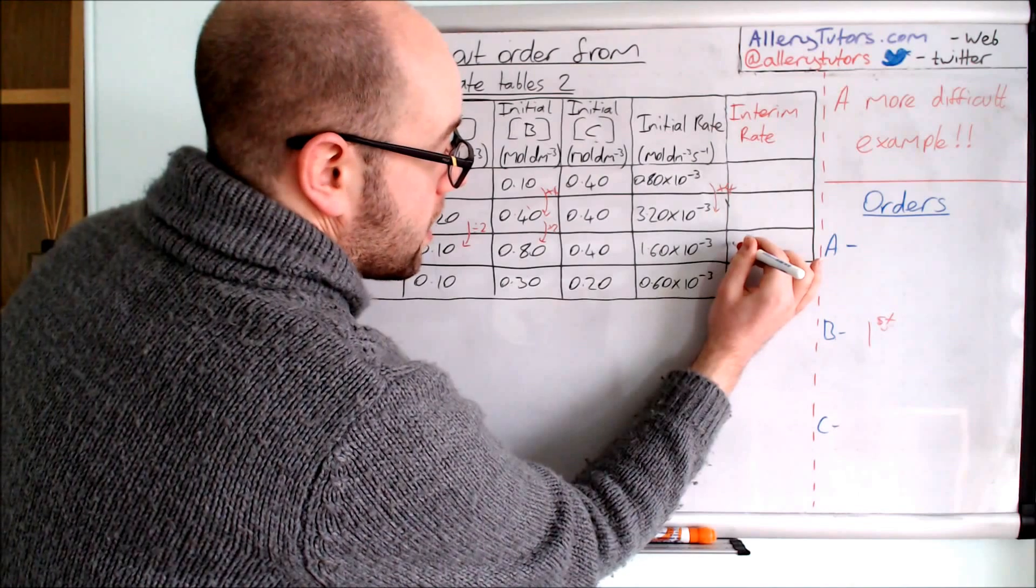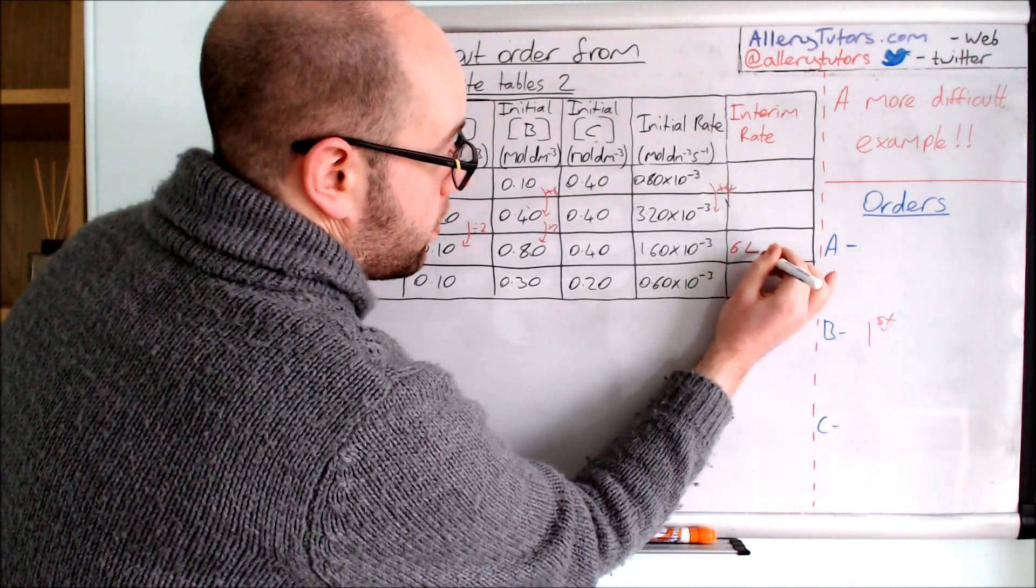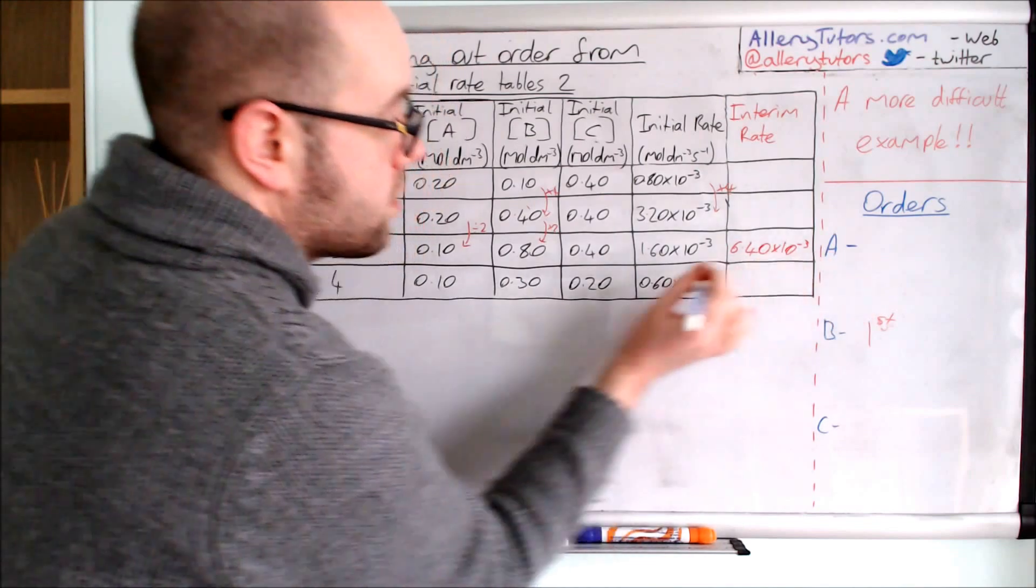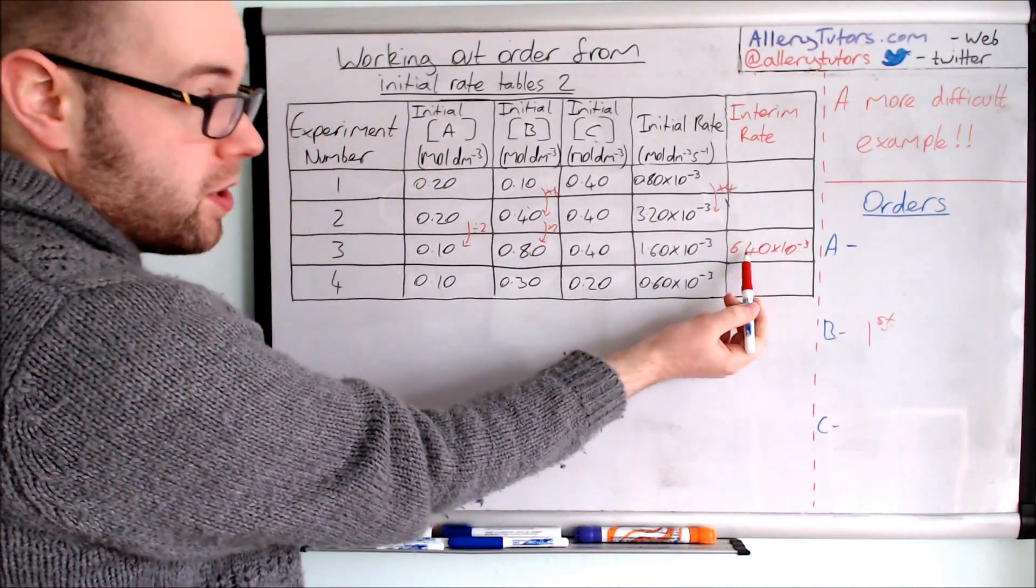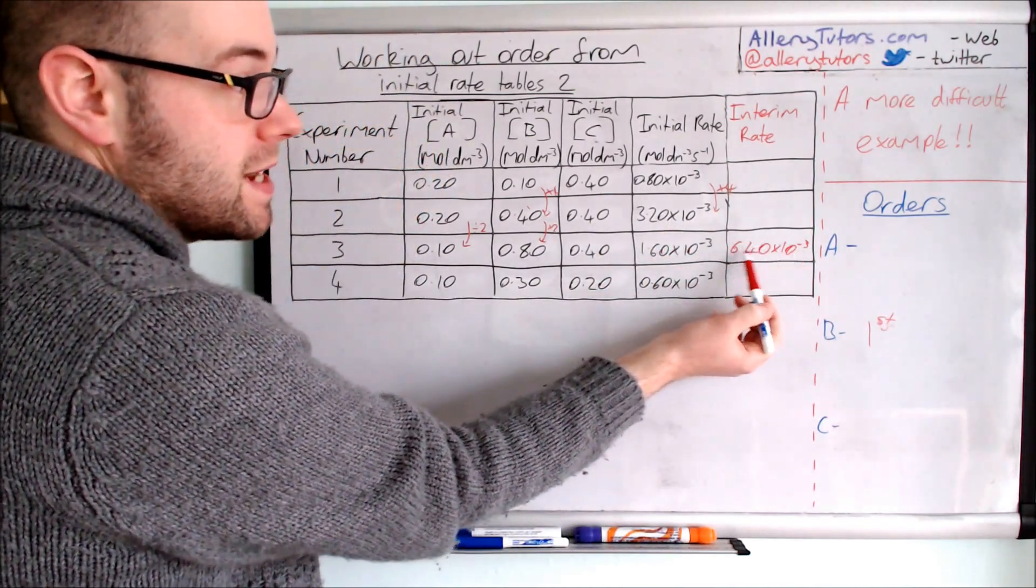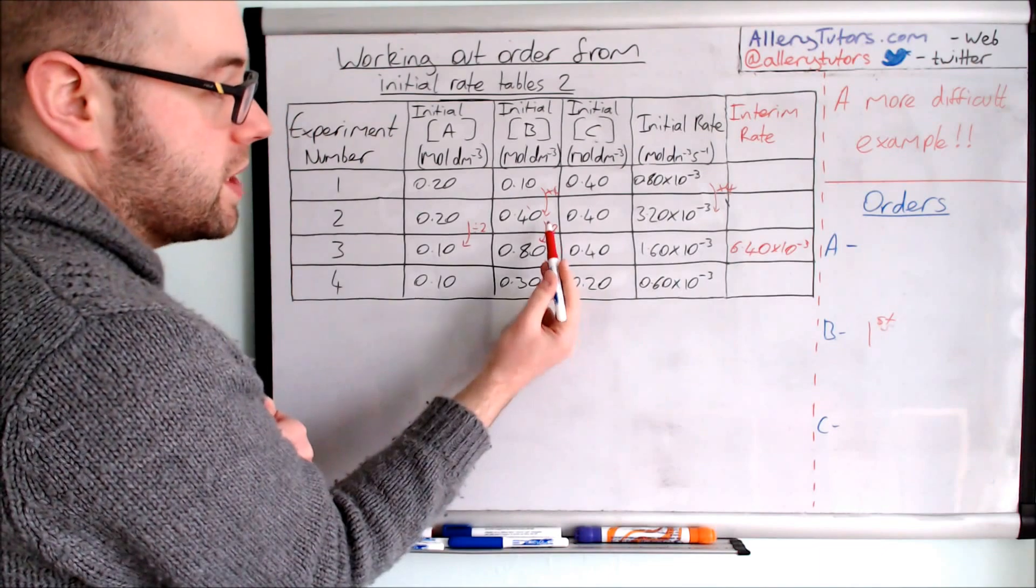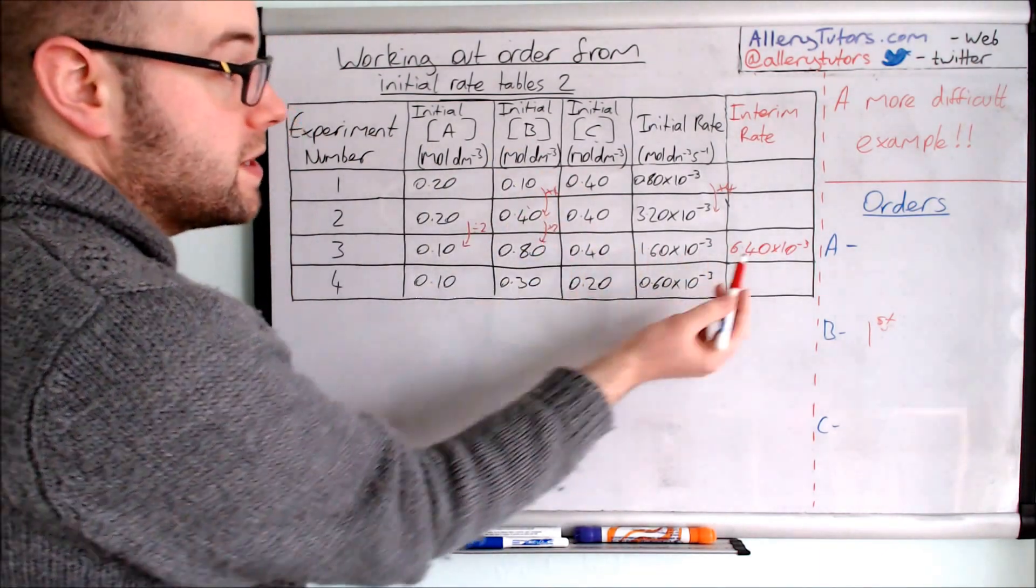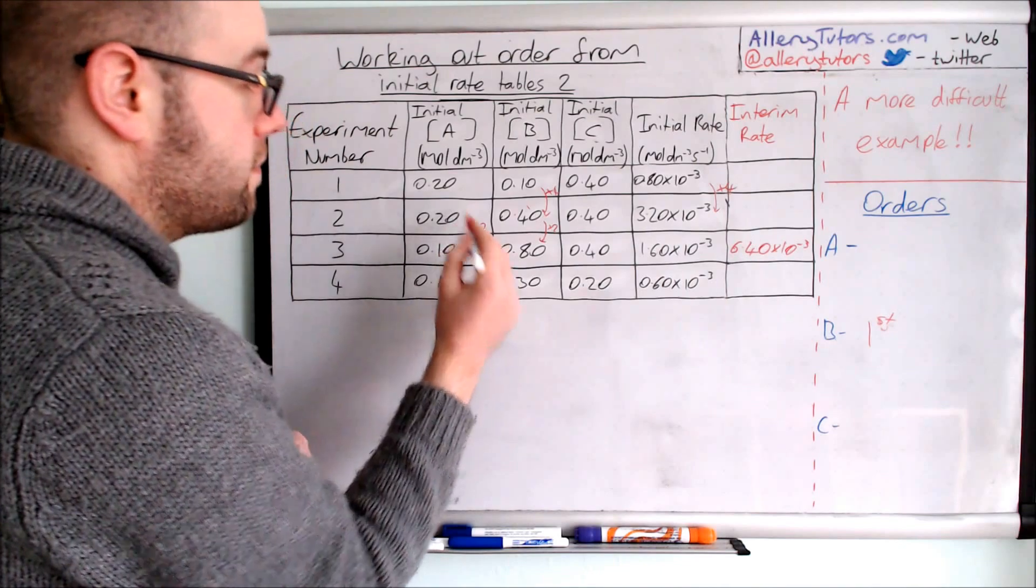What we can say is the effect of B is double the rate. So the interim rate to help us work it out would actually be 6.40 times by 10 to the minus 3. So the effect of B purely would take it to that rate there. Now we've identified what the rate would be because of B, we can then work out the difference for A.